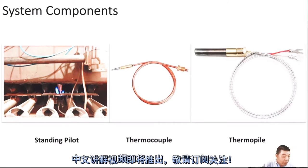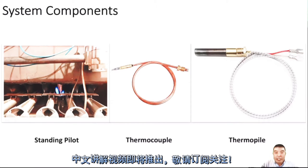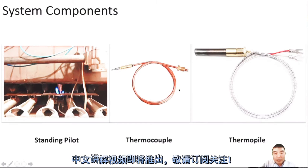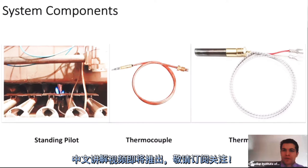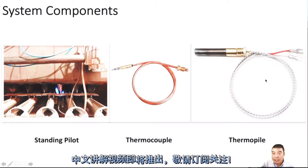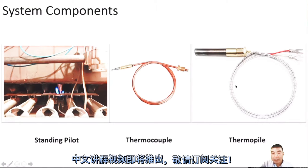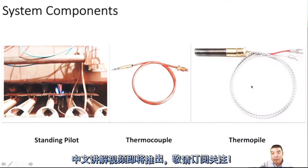The thermopile has the same function as the thermocouple, but the difference is it generates a different voltage. A thermocouple generates about 30 to 50 millivolts, while a thermopile generates about 500 to 750 millivolts — a big difference. We use the thermopile for the fireplace. Sometimes the fireplace uses both; I'm not sure why they use both, but sometimes we see both there.